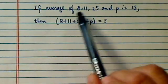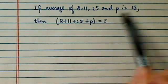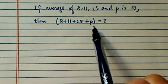The question asks: if the average of 8, 11, 25, and P is 15, then what is the whole sum?